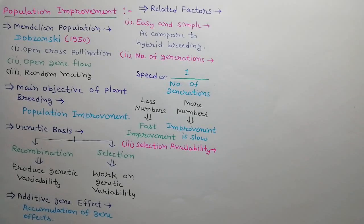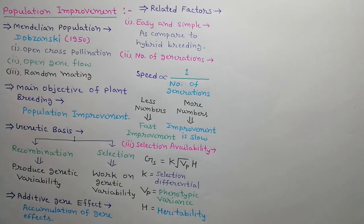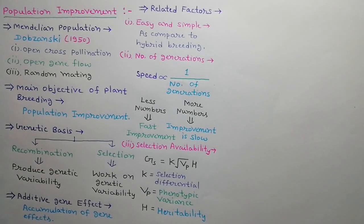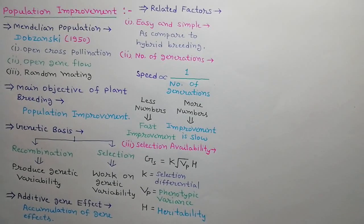Next factor is selection availability. It is denoted by the following formula: GS is equal to K under root VPH. Here, K is selection differential, VP is phenotypic variance, and H is heritability.